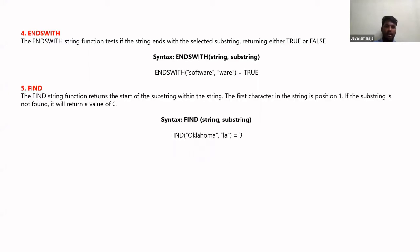Unlike CONTAINS and ENDSWITH which return boolean true or false, the FIND function returns the exact position where a substring is found within a string. For example, if 'lda' is found at the third position in a string, FIND returns 3. So CONTAINS and ENDSWITH deal with boolean results, while FIND is more concerned with the position of the substring.